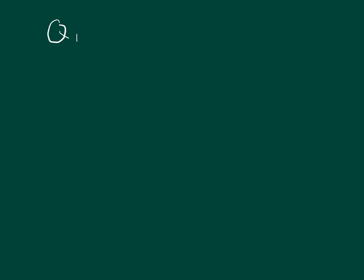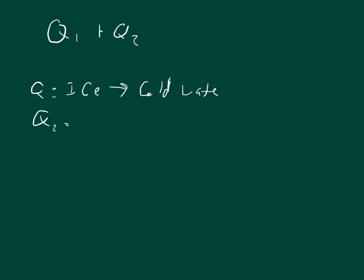Now let's set up our equation using Q. Q1 is the latent heat term — changing from ice to liquid. Q2 is the cold water warming up. And Q3 is the warm water cooling down, since we put all of this into a pot of warm water.